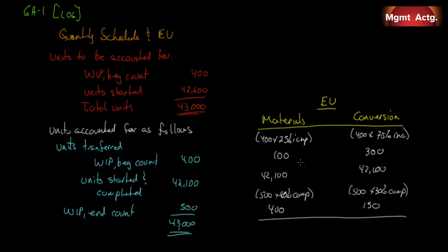We total up our equivalent units and get 42,600 for materials and 42,550 for conversion costs. All costs incurred during the period went to make this many equivalent units — that's the first part of the production schedule for a FIFO inventory system.